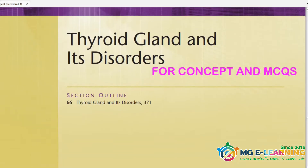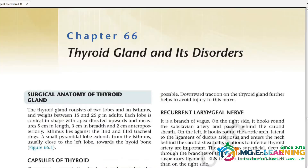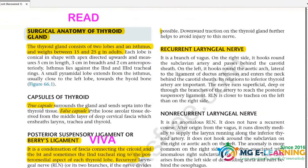Starting with Chapter 66, we have viva and MCQ questions prepared. The first viva question is: What is the anatomy of the thyroid gland? How many lobes? How many masses? How much does it weigh? Read it carefully. Also study the capsule of the thyroid gland.